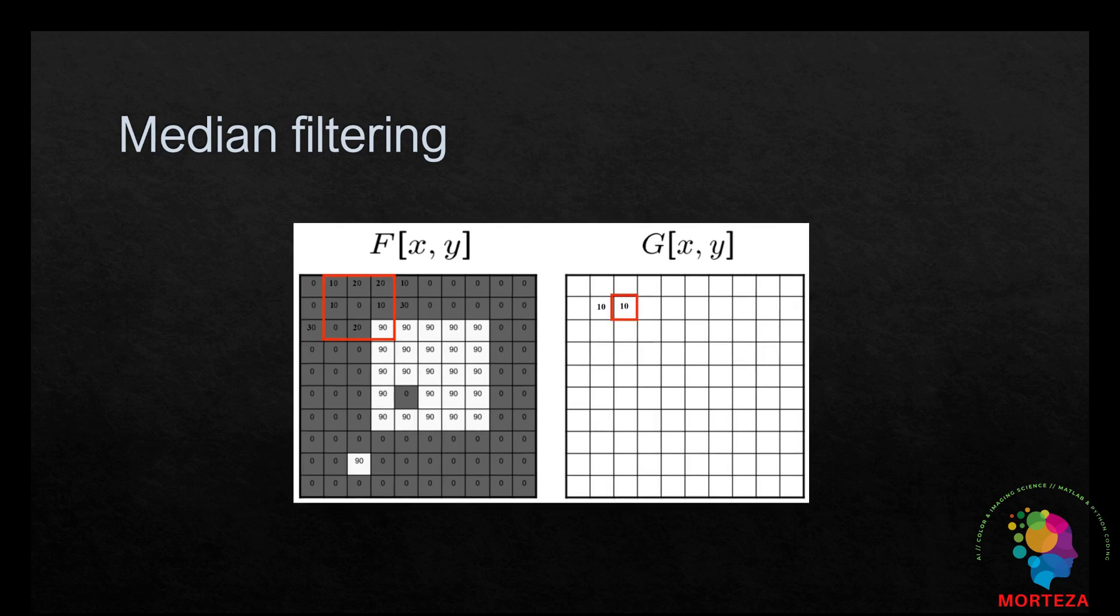As you can see, as the window, this is the window, and this is the neighbor, and this is the neighboring area around this central point.